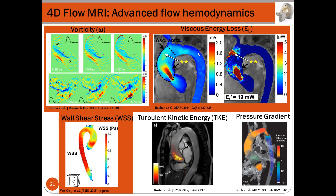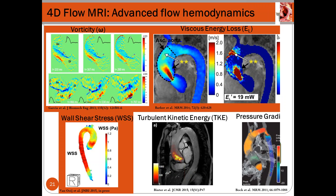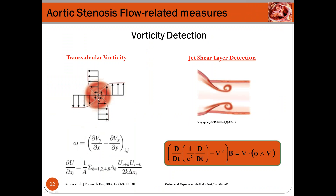I have experience with vorticity, energy loss, and wall shear stress. For this presentation I will focus on vorticity. Vorticity is the capacity of a fluid to rotate around a specific point in space, defined in 2D by an equation giving information about fluid rotation. We are interested in vorticity because it allows us to quantify the jet-shear layer crossing the aortic valve — the structures corresponding to this layer can potentially allow better quantification of the valve effective orifice area and thus better quantify stenosis severity.